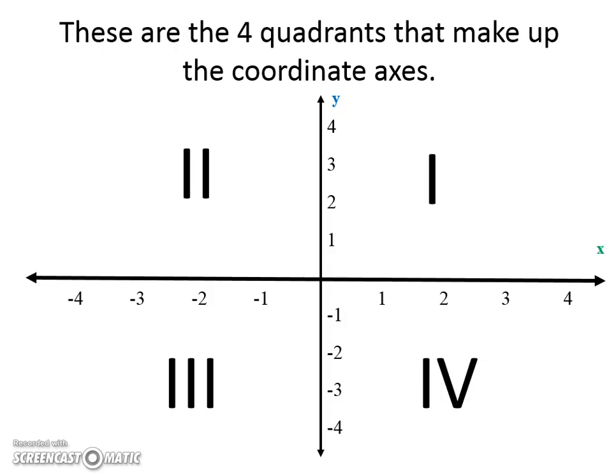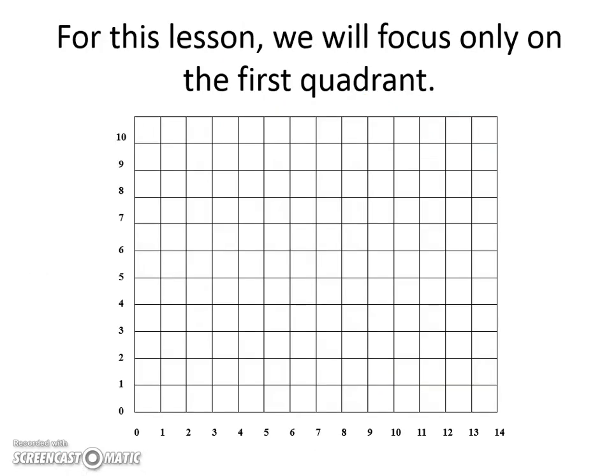There are actually four quadrants that make up the coordinate axes. Quadrant one is here, followed by two, three, and four. And I like to remember it by it makes a C for coordinate. So, wherever I start the C, that's one, then it goes into quadrant two, then three, then four. But for this lesson, as I said, we're just going to focus on the first quadrant.